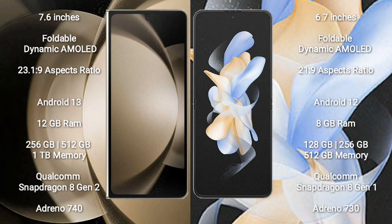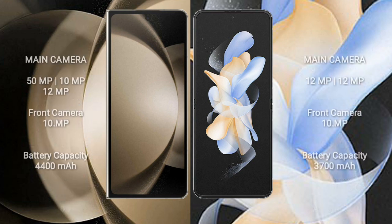The Samsung Galaxy Z Fold 5 comes with 12GB RAM and 256GB or 1TB internal storage, with a Qualcomm Snapdragon 8 Gen 2 processor and Adreno 740 GPU. The Samsung Galaxy Z Flip 4 comes with 8GB RAM and 128GB or 256GB internal storage, with a Qualcomm Snapdragon 8 Gen 1 processor and Adreno 730 GPU.